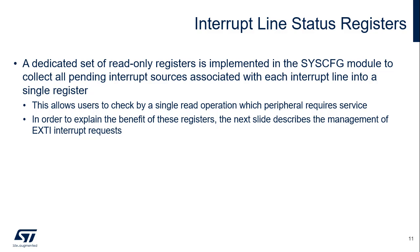The SysCFG module supports four interrupt line status registers. They enable software to easily find the cause of an EXTI interrupt by having in the same register all pending interrupt sources associated with a particular interrupt line. In the STM32C0, there is one interrupt line status register per peripheral capable of asserting an external interrupt. The benefit of these interrupt line status registers is explained in the next slide.